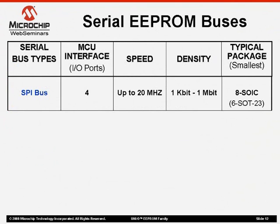As a brief overview, we would like to go over a few of the main features that are sometimes used when deciding on a serial bus interface. In the first column, the standard serial bus types are listed, followed by the number of IO ports needed to communicate with a microcontroller. Next, the maximum bus operating speeds and the density ranges are shown in the next two columns. And finally, the last column shows the typical packages used along with the smallest packages available for Microchip's EEPROM devices.